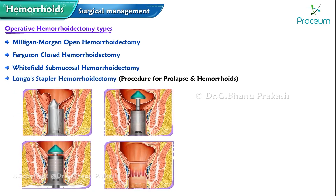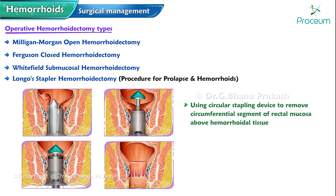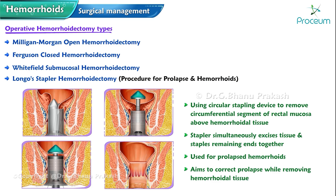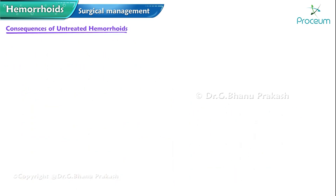The Longo stapled hemorrhoidectomy, a procedure for prolapse and hemorrhoids, uses a circular stapling device to remove a circumferential segment of the rectal mucosa above the hemorrhoidal tissue. The stapler simultaneously excises the tissue and staples the remaining ends together. It is typically used for prolapsed hemorrhoids and aims to correct prolapse while removing hemorrhoidal tissue.